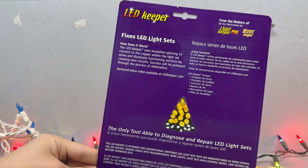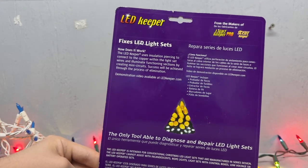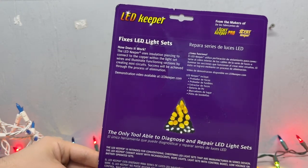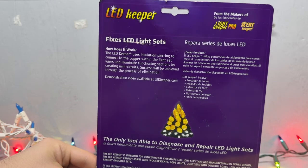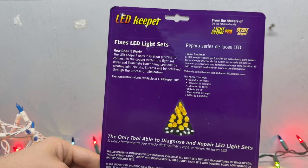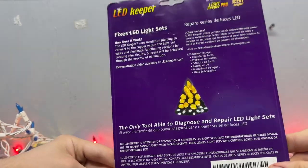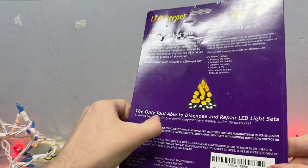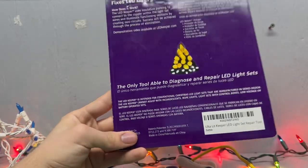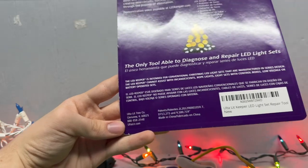It uses insulation piercing to connect to the copper within the light set to eliminate the functioning sections by creating mini circuits. And you kind of eliminate the sections over time until you have one bulb remaining that it won't go to either side, which I'll show you later. It's how you narrow it down. Most of this is in Spanish. At least I think that's Spanish. The only tool available to diagnose and repair LED light sets. That is 100% true.